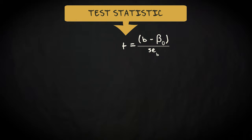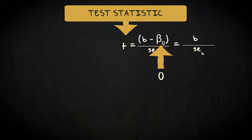The test statistic is given by the formula T equals B minus the value of beta under the null hypothesis, beta sub zero, divided by the standard error of the regression coefficient B, SE sub B. Because the value of the population regression coefficient under the null hypothesis is zero, this simplifies to the sample regression coefficient B divided by its standard error. The standard error says something about the precision with which we estimate B. I won't ask you to calculate the standard error manually, since it involves computing sums of squares for x and doesn't really help in understanding the procedure better.